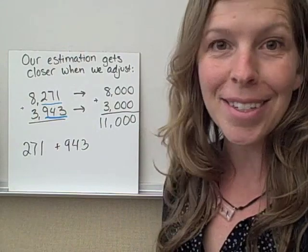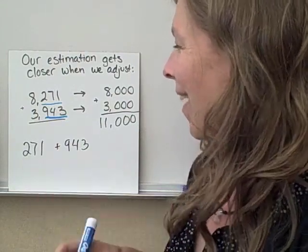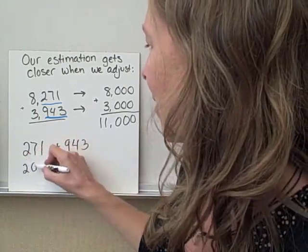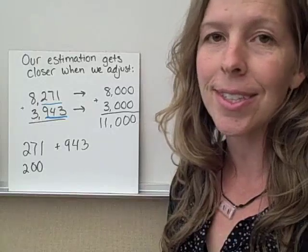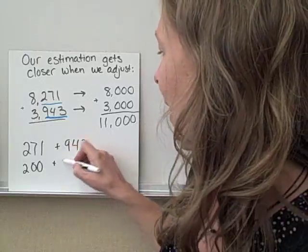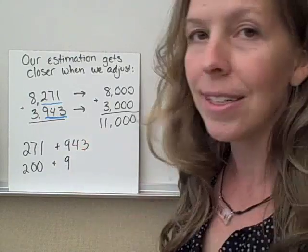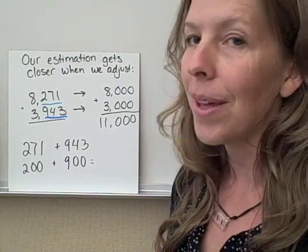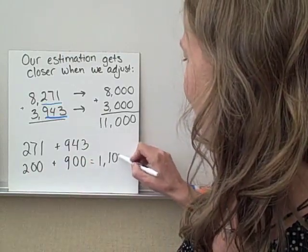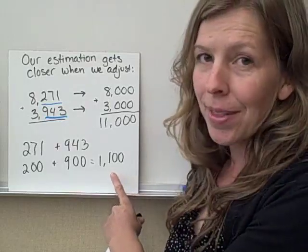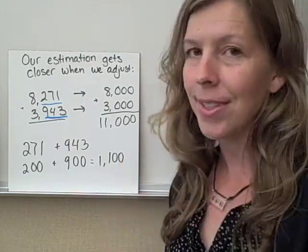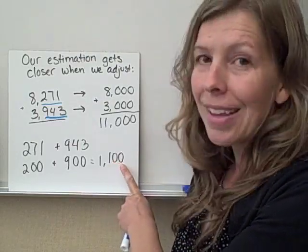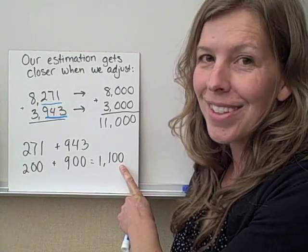And what do we do with those? We do front-end estimation again. So you see, you take the leading digit, and I'll write it right down below, and that becomes 200. The rest of the digits get forgotten, they're zeros. Then for the second number, same thing. Take the leading digit, and the rest of it just becomes zeros. So now we add that together, 1,100. And this is the one part that you might forget, so this is something to really pay attention to. When we do this, we do our final adjustment. We take this number, and we round to the nearest thousand.